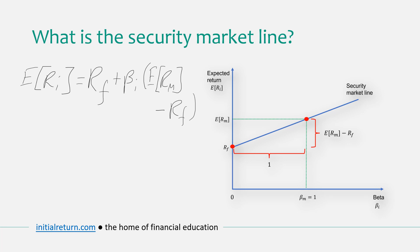In general, the equation of a straight line has a y variable, an x variable which is beta, a slope, and an intercept. The slope in this case is the market risk premium, because it's the vertical distance divided by the horizontal distance — and since the market portfolio has a beta of one, the slope is simply the market risk premium. The intercept is the risk-free rate. So to repeat: the SML shows a linear relationship between expected return and beta, with the intercept as the risk-free rate and the slope as the market risk premium.